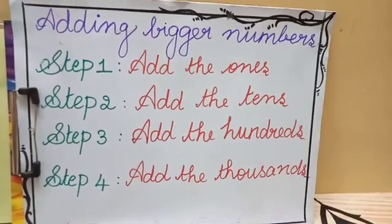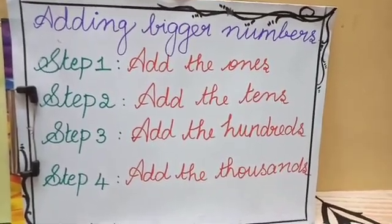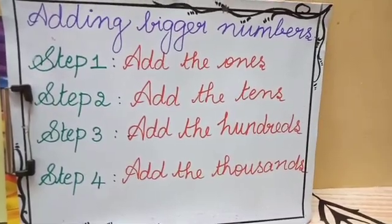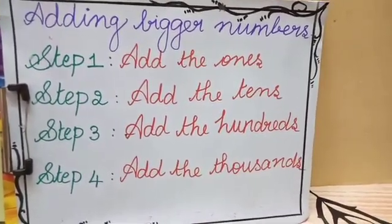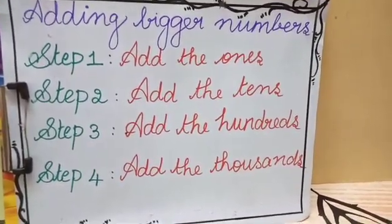Let's recollect how to add bigger numbers. We have a series of steps. We have to add the ones and tens and the hundreds and thousands and so on. Here comes the example.